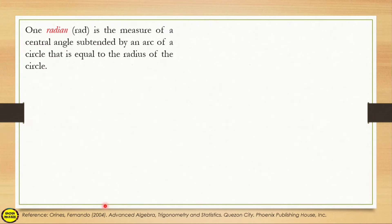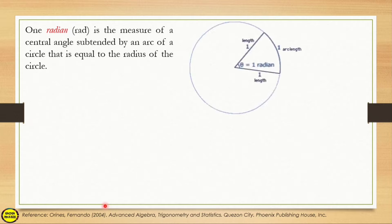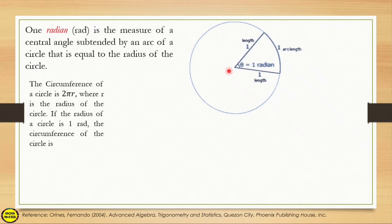One radian is the measure of a central angle subtended by an arc of a circle that is equal to the radius of the circle. As you can see on the illustration, the circumference of a circle is 2πr, so one whole rotation of the circle is equivalent to 2πr radians, where r is the radius of the circle.